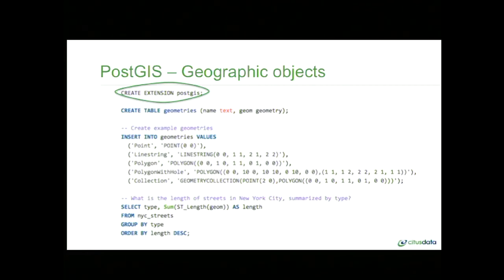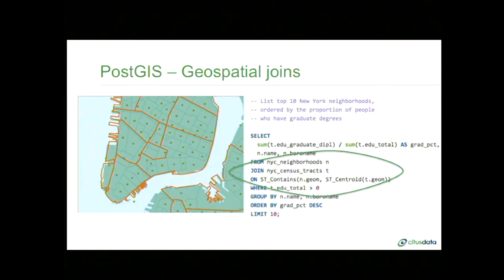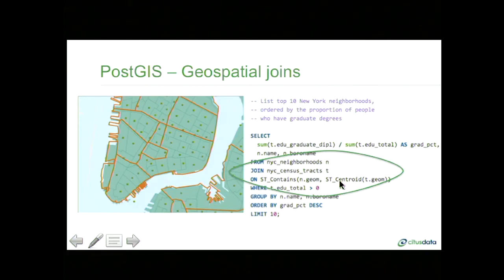In fact, the New York City map we just looked at was served by Postgres. You can do much more with PostGIS than that. This example query shows the top ten neighborhoods in New York ordered by the proportion of people with grad school degrees. To do this, we're doing a geospatial join between NYC neighborhoods and census tracts, where the join operation determines which census tract polygons to include in each neighborhood summary. When issuing this geospatial query, we're using both the aggregate functions that come with Postgres and extending the SQL syntax for geospatial joins.